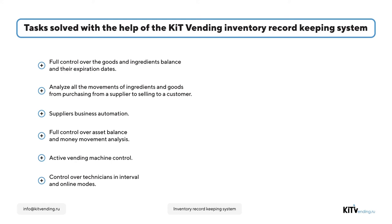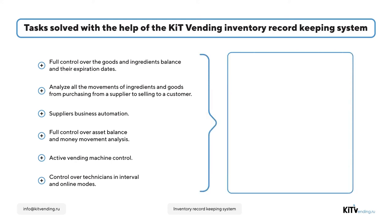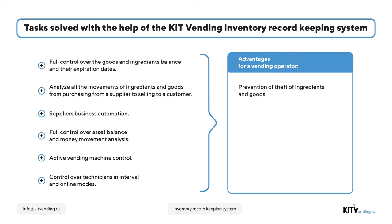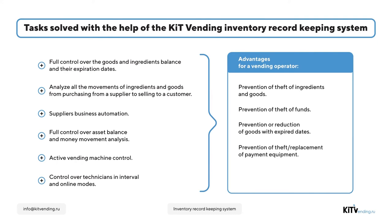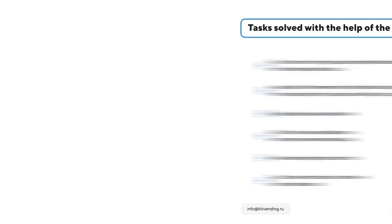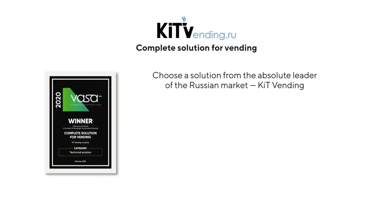Using this record-keeping system, the vending operator gets the following advantages: prevention of goods and ingredients being stolen, prevention of money being stolen, prevention or reduction of scrapping goods with expired dates, prevention of payment equipment being stolen or replaced, and procurement content optimization. Kit Vending Project is the overall solution for your business. Thank you for your attention.